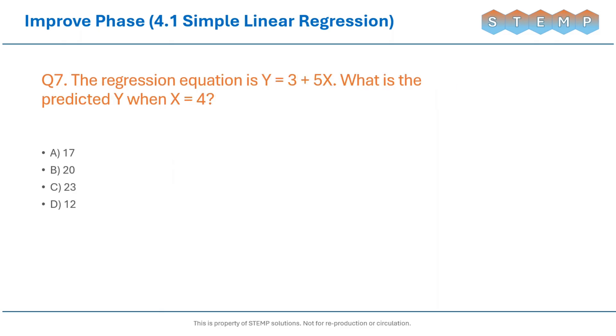The regression equation is y = 3 + 5x. What is the predicted y when x is equal to 4?